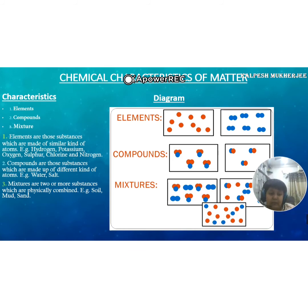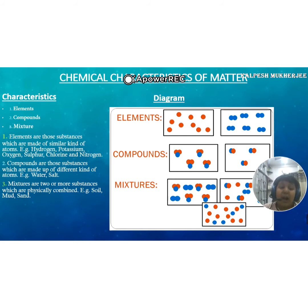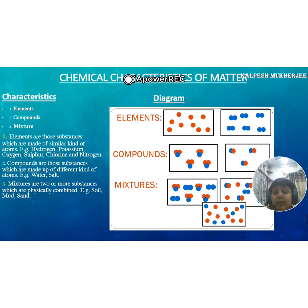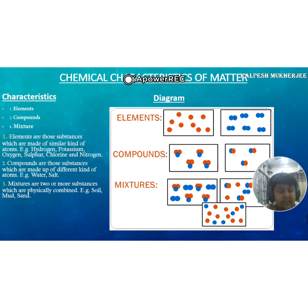The second is compounds. Compounds are substances which are made of different kinds of atoms — like water and salt. Water has two elements: it is made up of two different kinds of atoms — hydrogen and oxygen. It has two atoms of hydrogen and one atom of oxygen.